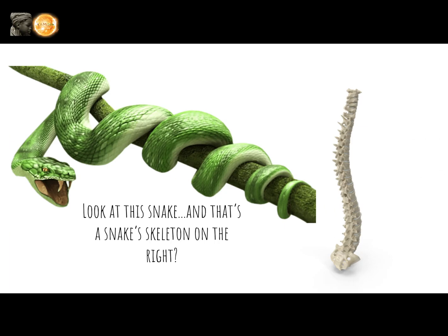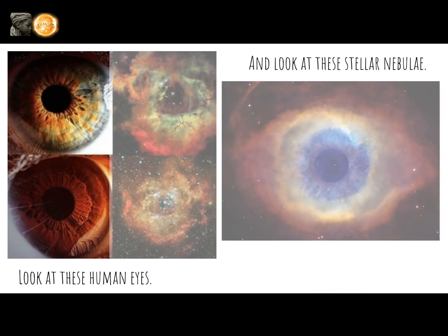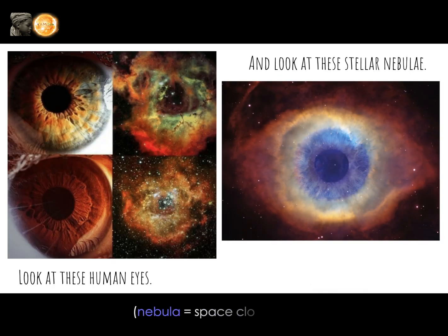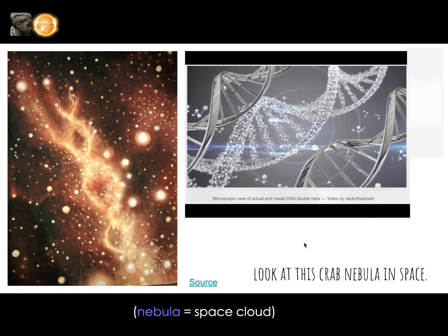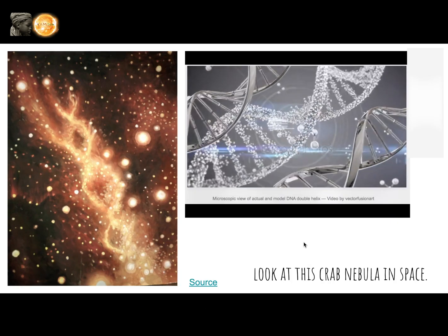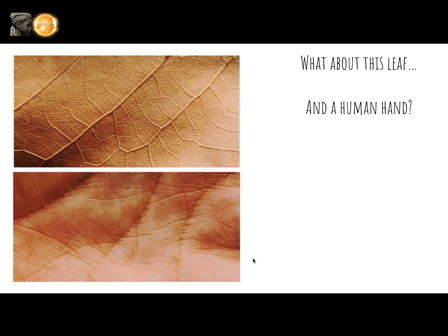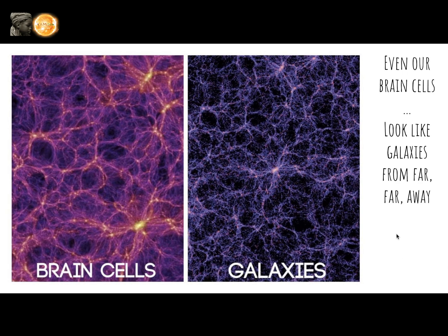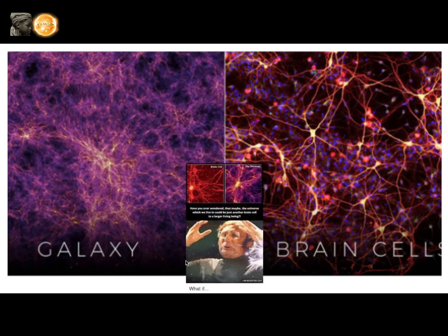Look at this snake over here, wrapped up along this branch. And that to the right? That looks like a snake skeleton, right? Nope — it's a human spine. Look at these human eyes, and look at these stellar nebulae. Look at this crab nebula in space. Now look at the DNA in our cells. See a similarity? What about this leaf and a human hand? Even our brain cells look like galaxies from far, far away.